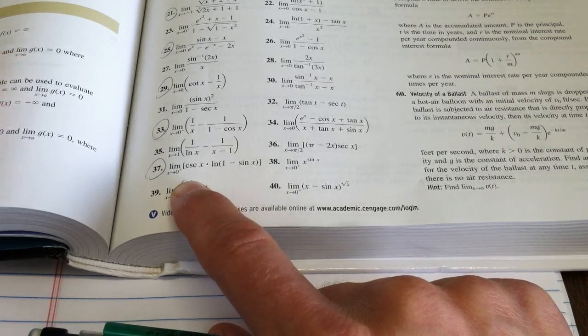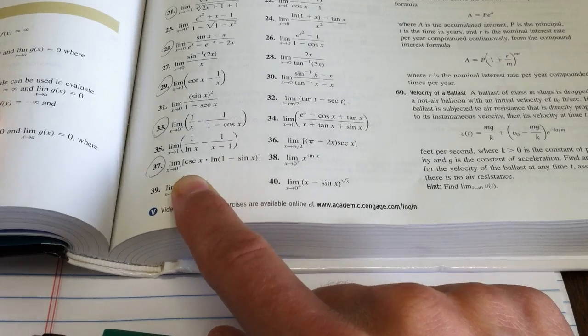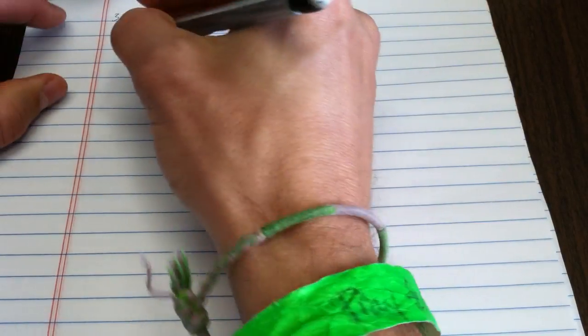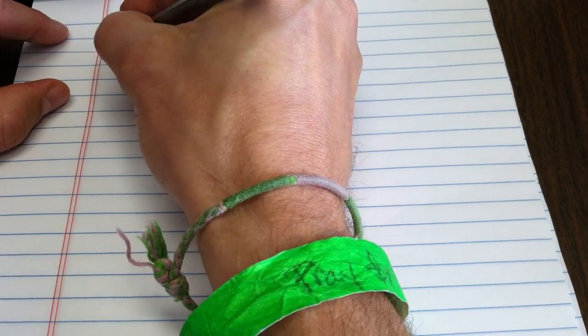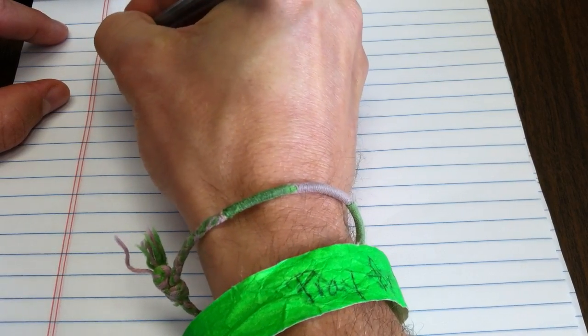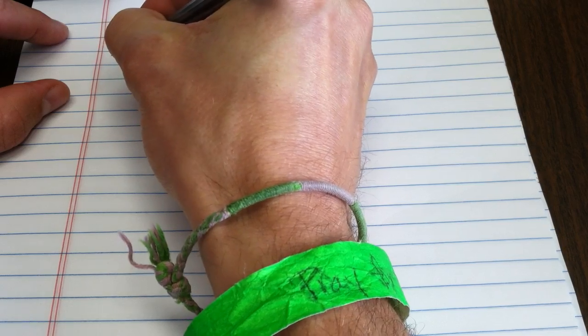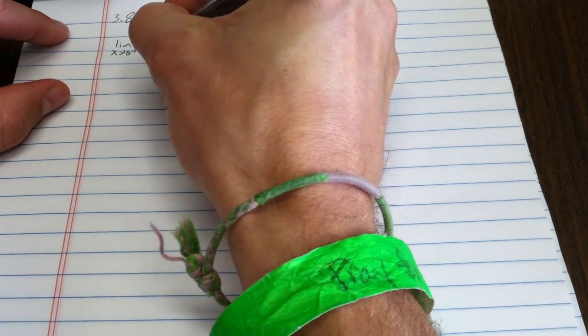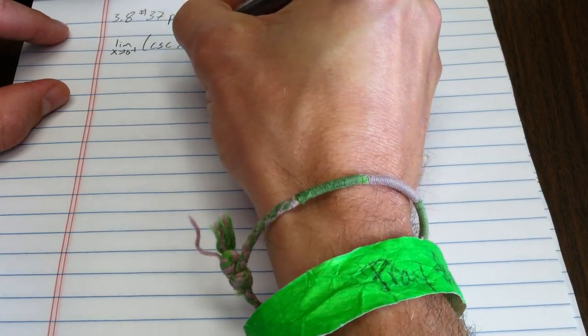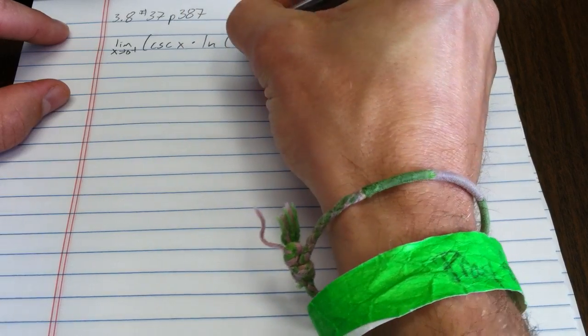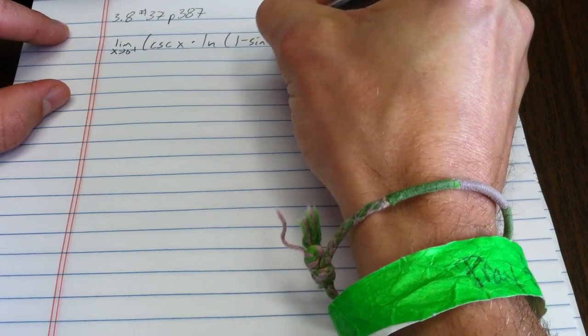Evaluate the limit using L'Hôpital's rule if appropriate. So the first thing we're going to do is jot that problem down. The limit as x goes to 0 from the positive side of cosecant x times the natural log of 1 minus sine x.